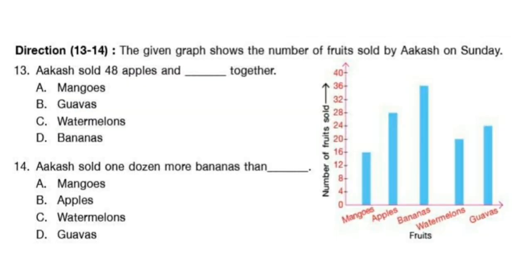Directions for questions 13 and 14: the given graph shows the number of fruits sold by Akash on Sunday. Question 13. Akash sold 48 apples and another fruit together. How many apples did he sell? The number is 28, so 48 minus 28 gives 20. He sold 20 watermelons, so the answer is option C.